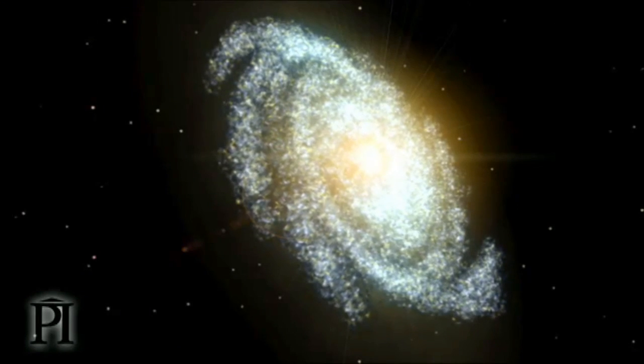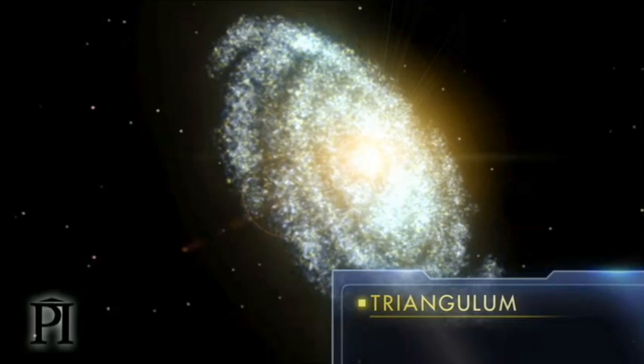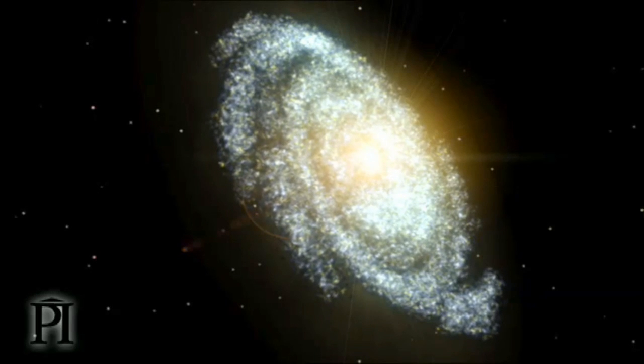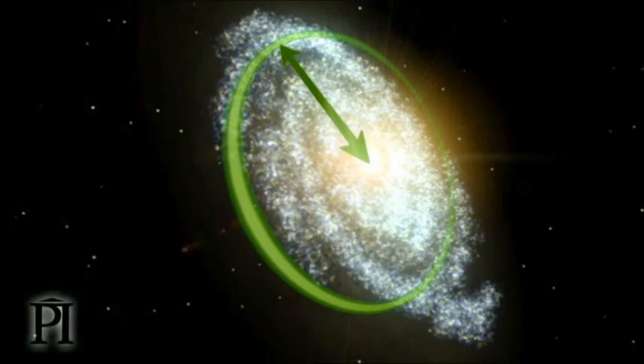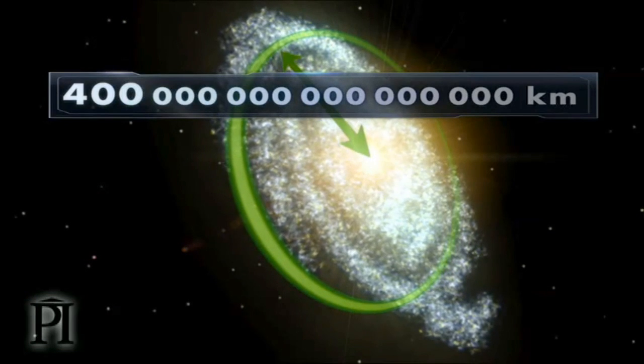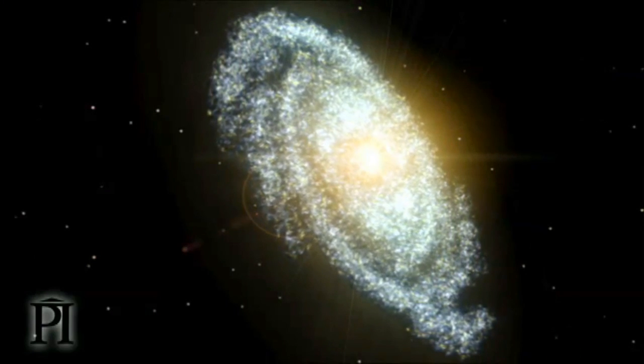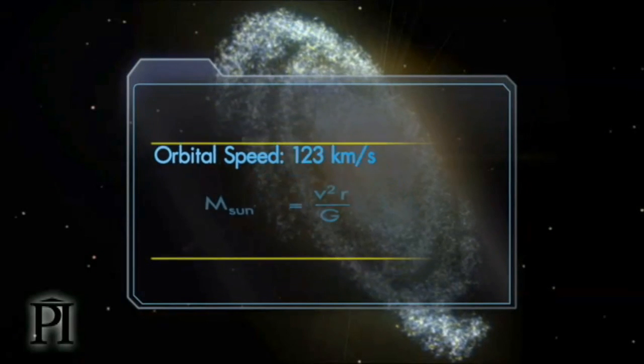Let's use the Doppler effect to help measure the mass of a nearby galaxy called Triangulum, which, like Andromeda, has stars orbiting at speeds higher than expected. Let's pick a star in the outer regions that's orbiting the centre of the galaxy with a radius of 400 million billion kilometres. It turns out that the star in the outer regions of Triangulum is orbiting at 123 kilometres per second.